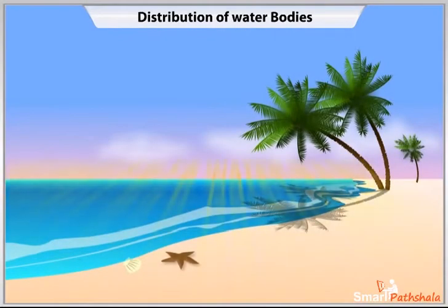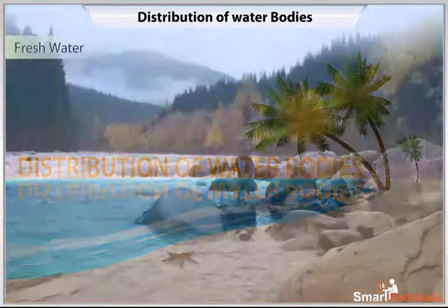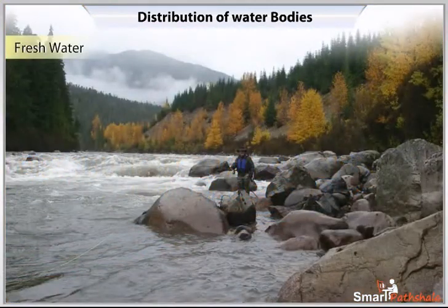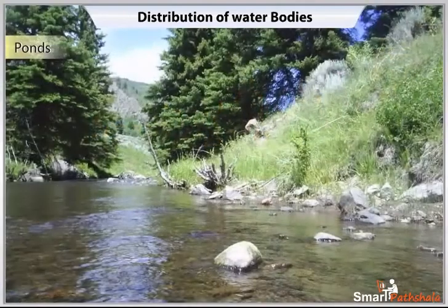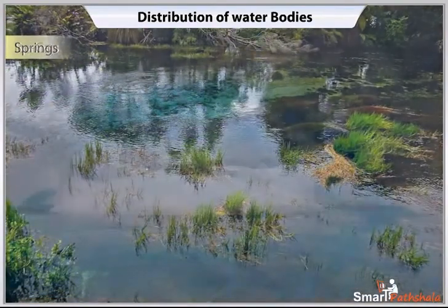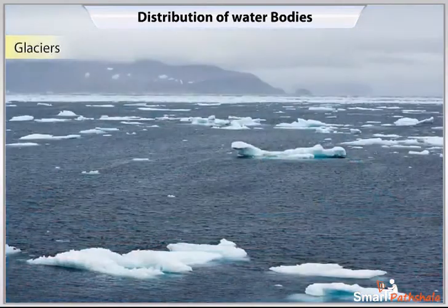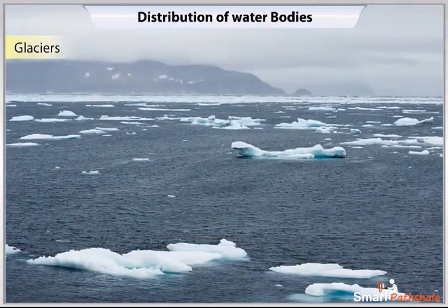Distribution of Water Bodies. The major sources of fresh water are the rivers, ponds, springs, ice caps and glaciers.